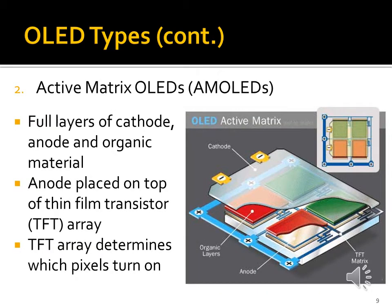The other main type of organic light-emitting diode is the active matrix organic light-emitting diode, or AMOLED. These are made with full layers of cathode, anode, and organic material, and the difference is that the anode is placed on top of a thin-film transistor array. The purpose of this TFT array is to determine which of the pixels actually turn on.